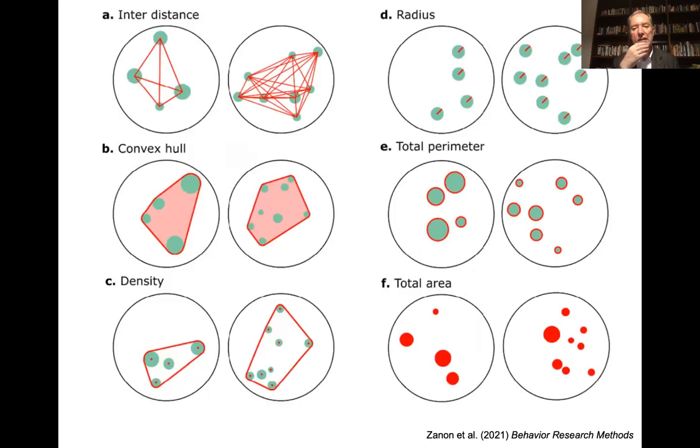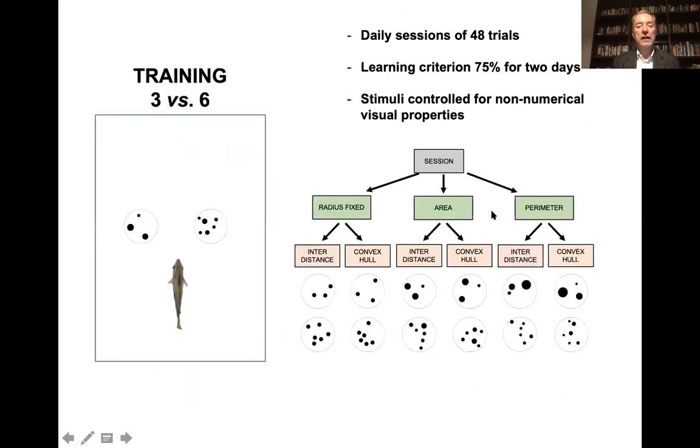And we have developed a script recently which has been published in order to control the different continuous variables associated with change in numerosity. So inter-distance, density, radius, convex hull, total area, density, and total perimeter.